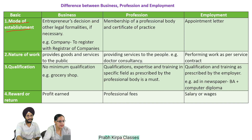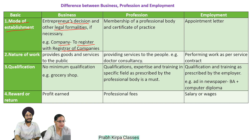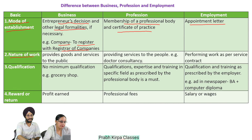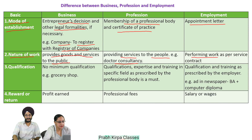In case of business, it is the entrepreneur who decides to set up business and he may have to comply with some legal formalities. For example, if a person wants to set up a company, he will have to register with the Registrar of Companies. In case of profession, membership of a professional body and certificate of practice is required. In case of employment, an appointment letter is issued by the employer. Number 2, nature of work: business provides goods and services to the public; professionals provide services to people, for example doctor consultancy; employees perform work as per service contract.